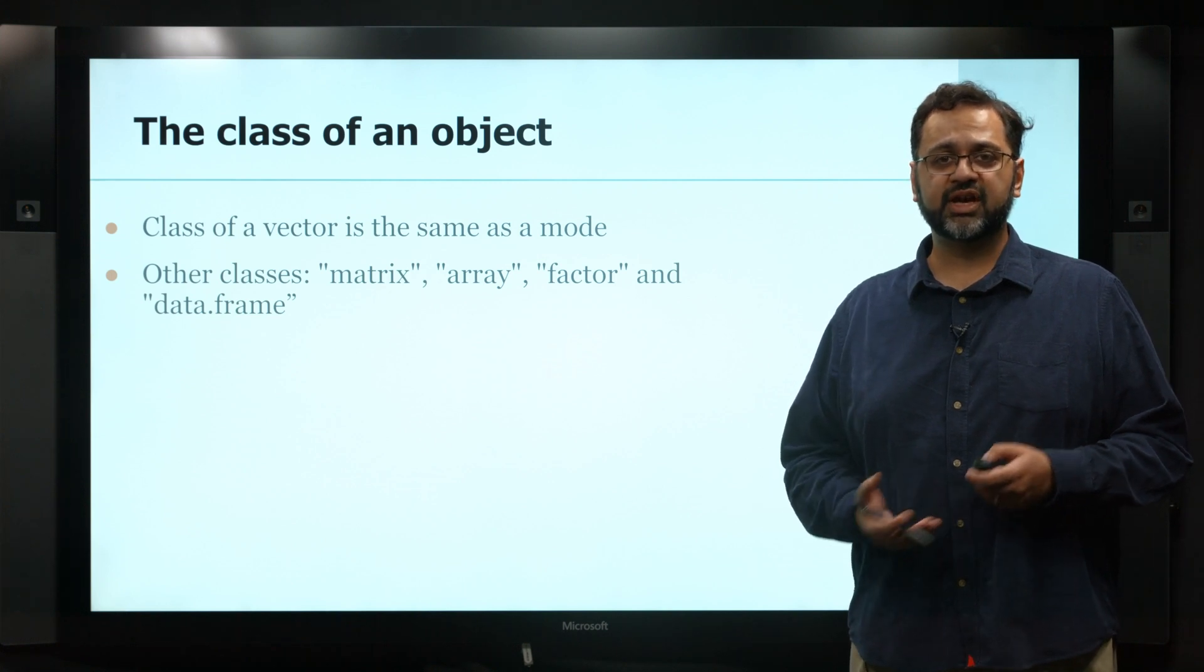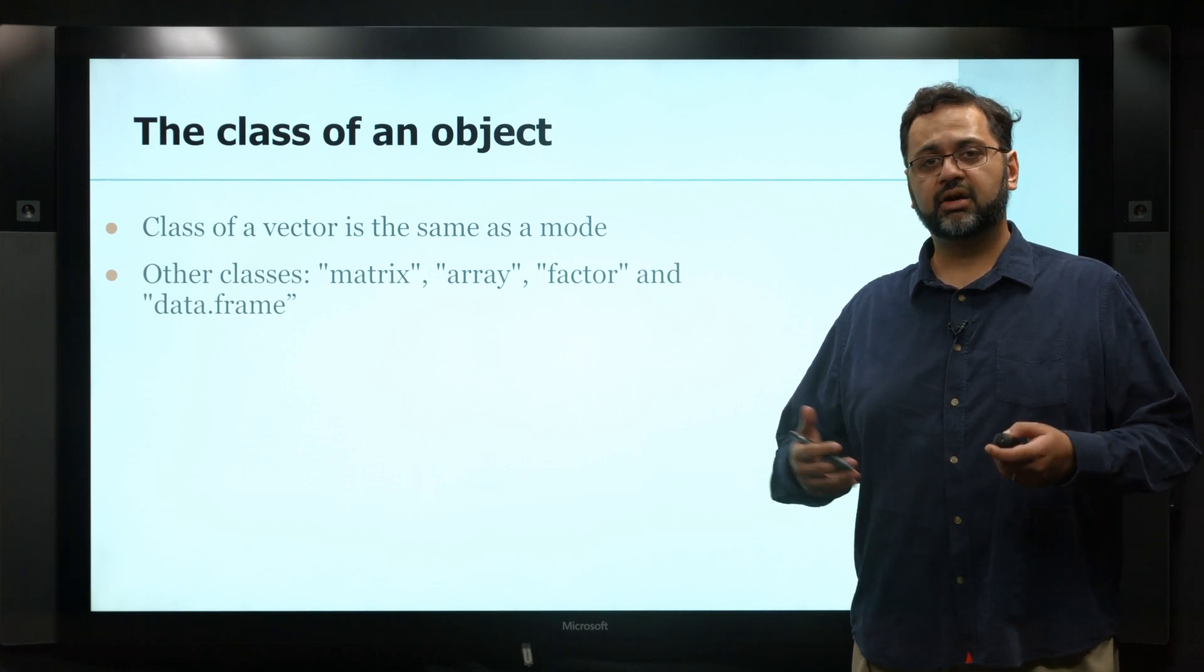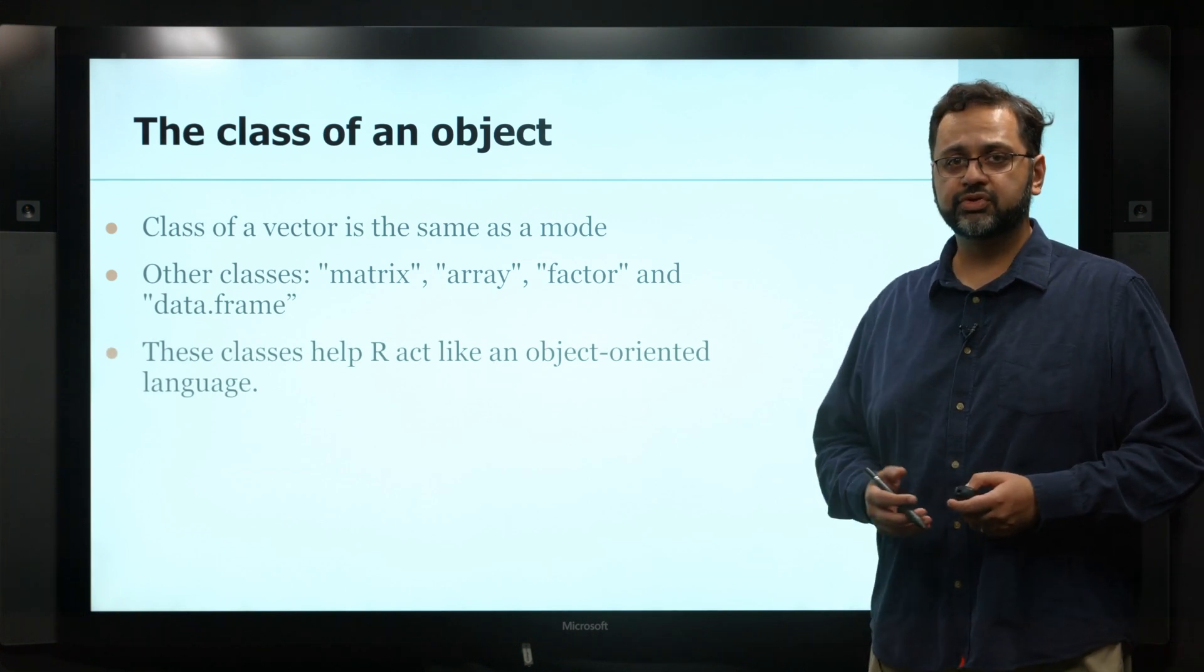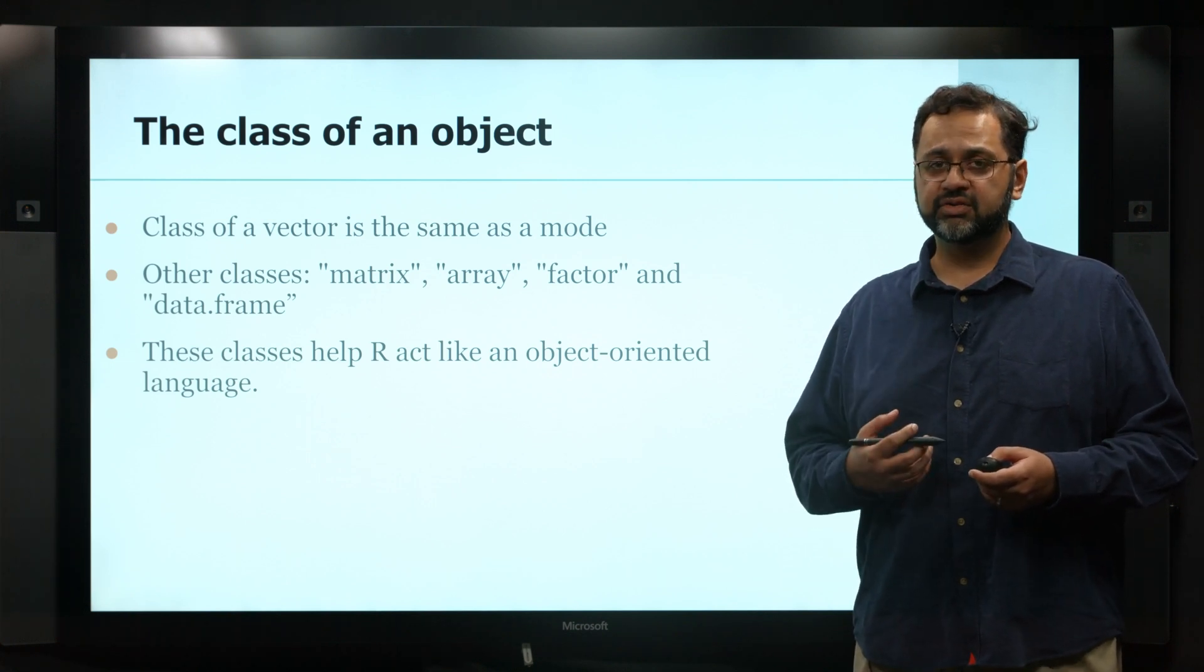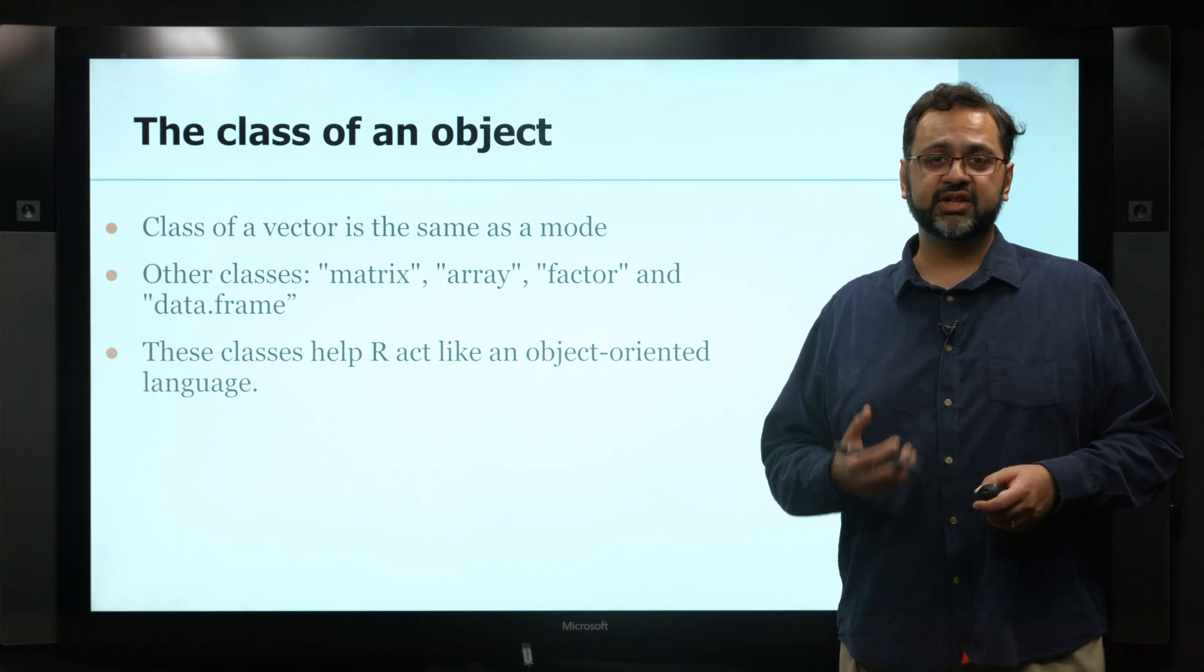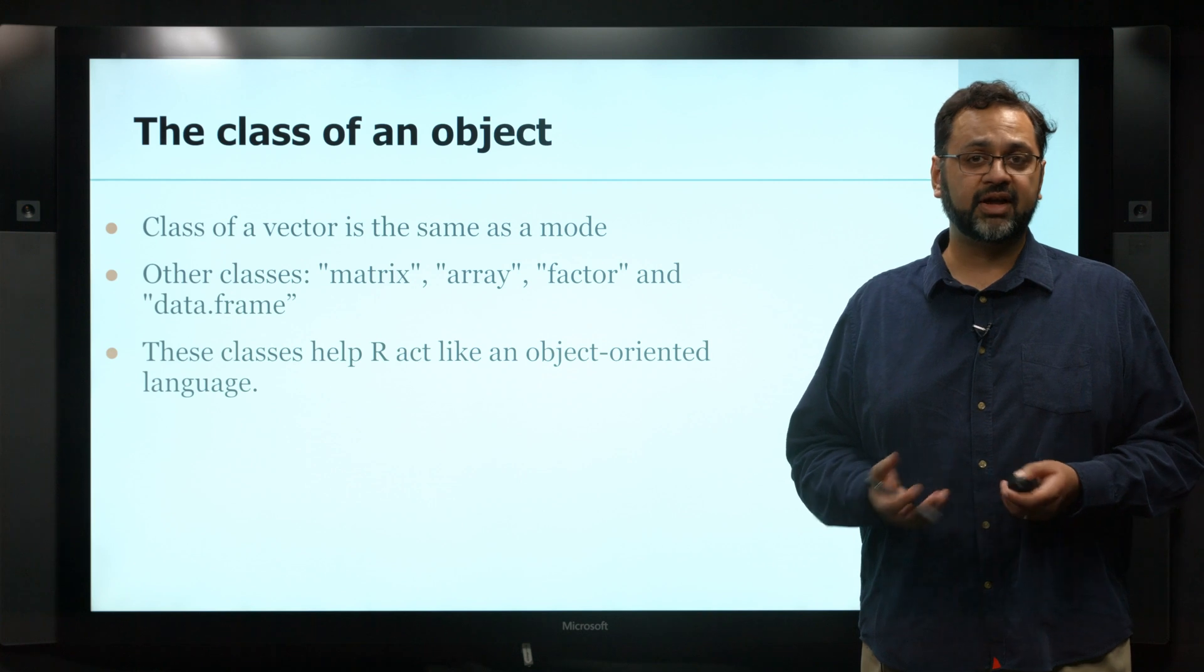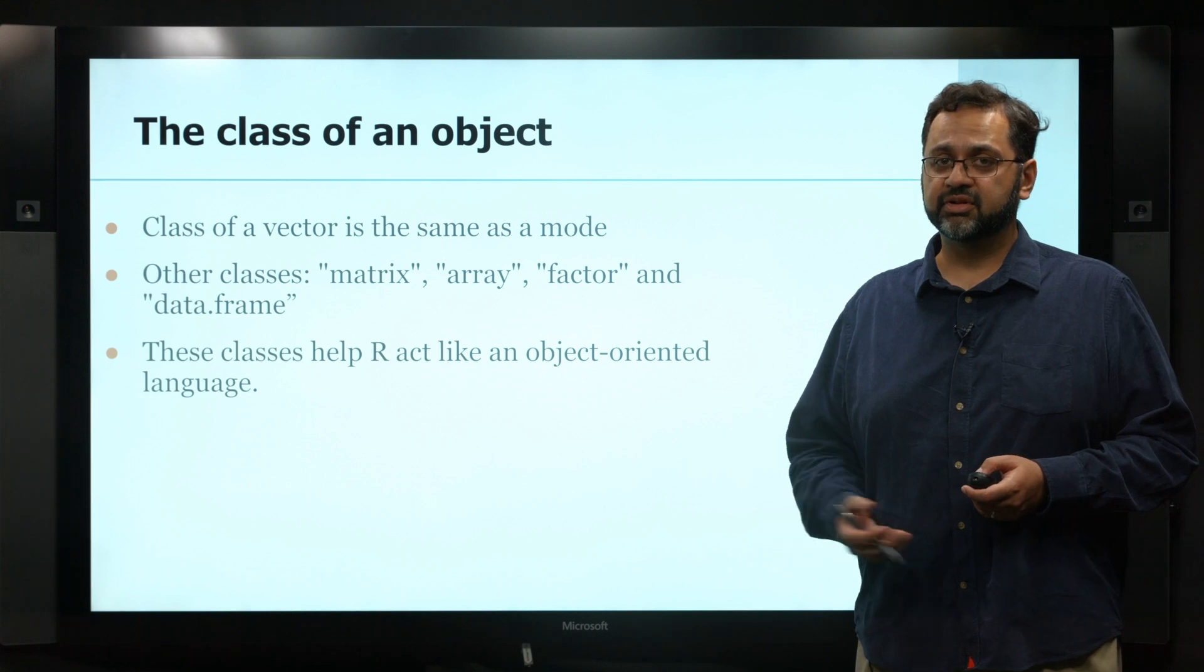It's important to know what class your object is because R is an object-oriented language. Depending on the type of data, it will do different things. Even simple things like print - if you tell it to print a data frame, it's going to do something slightly different than printing a vector. If you tell it to plot a matrix, it'll be different than plotting a simple vector.